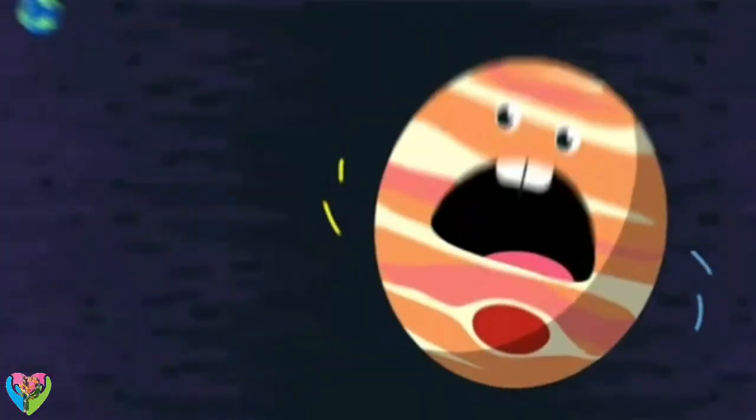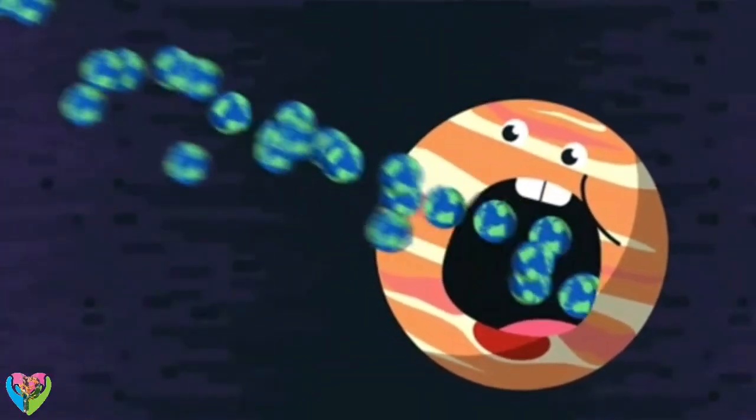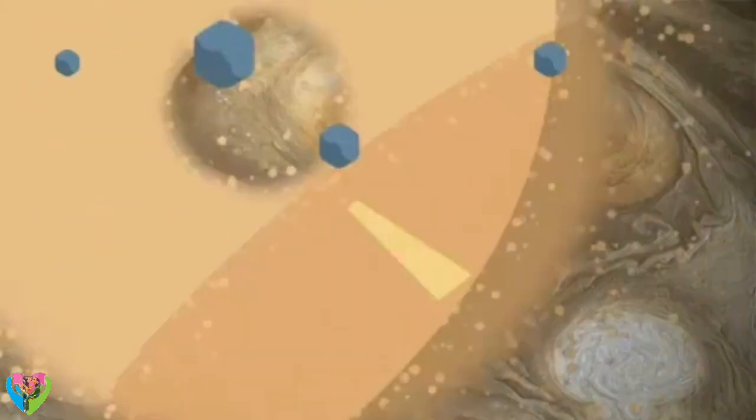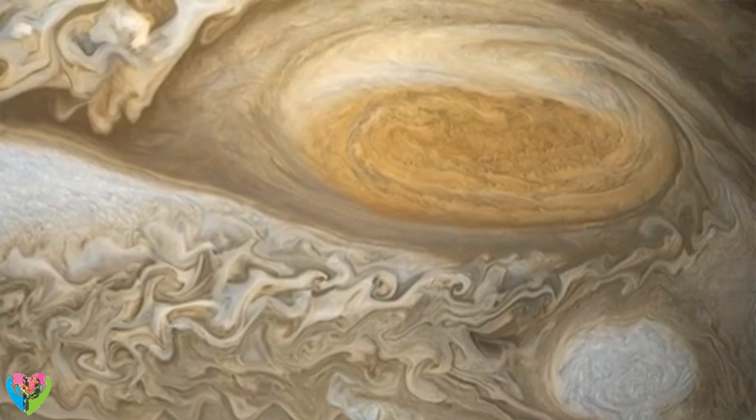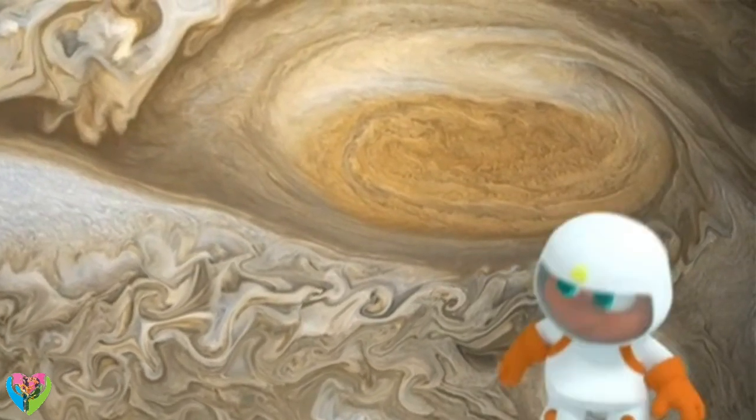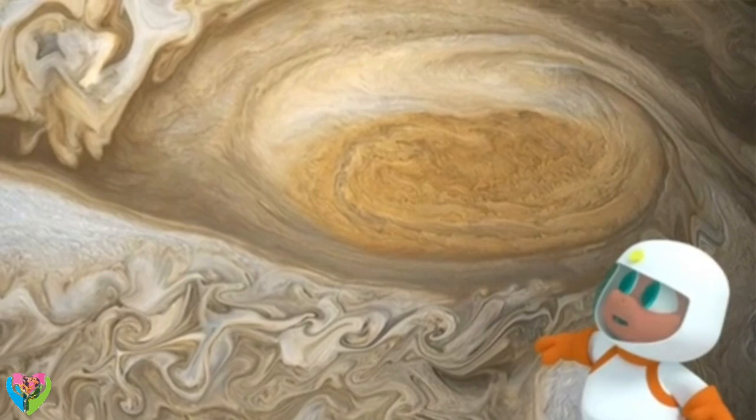You could fit 1,300 Earths into Jupiter, Gorby. It also has the biggest moon, Ganymede, and the largest storm, called the Great Red Spot. The storm has been going for 300 years.